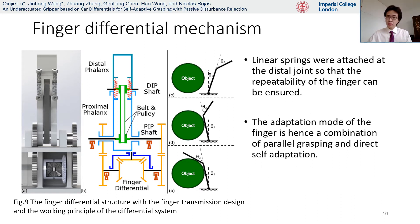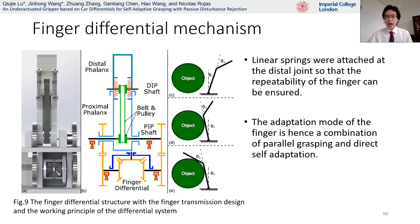As for other design aspects of the finger, silicone moulding was added to the proximal and distal phalanges to increase friction between the object and the finger. Timing belts were used to transmit power from the PIP to DIP joint, and the application of timing belts allows long-distance power transmission without increasing structural complexity. Timing belts can also guarantee the force transmission capabilities. In addition, linear springs were attached to the distal joint to ensure repeatability, so the grasping mode of the gripper is as a parallel gripper before contact with the object. If the proximal phalange touches the object, the distal phalange will start moving until it is in contact with the object too.